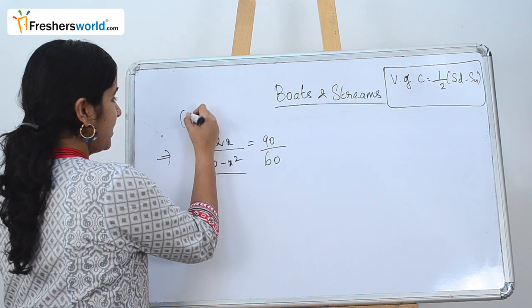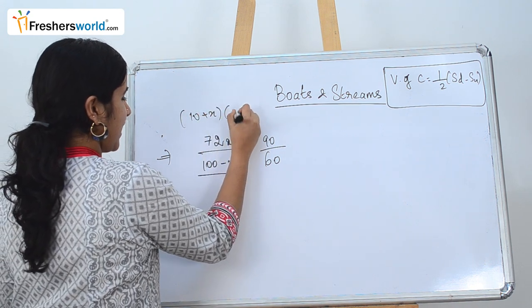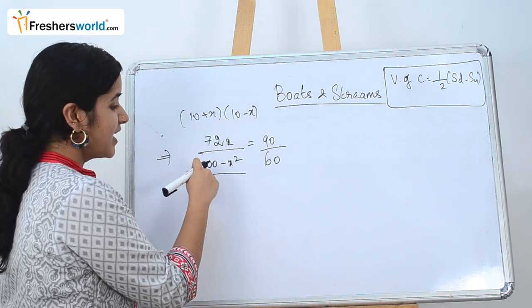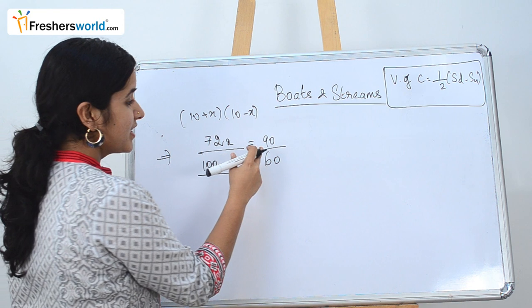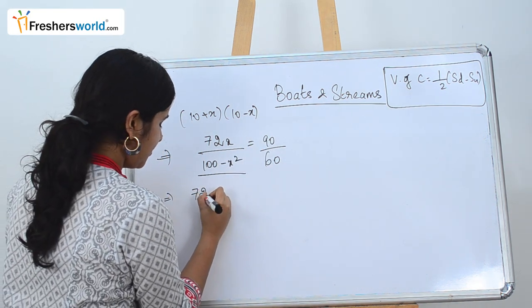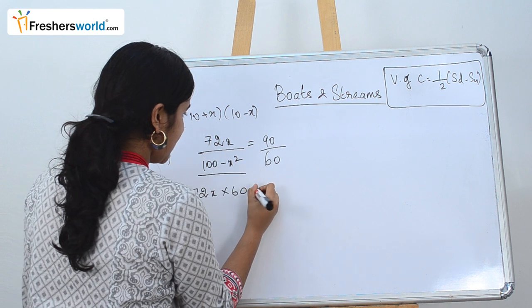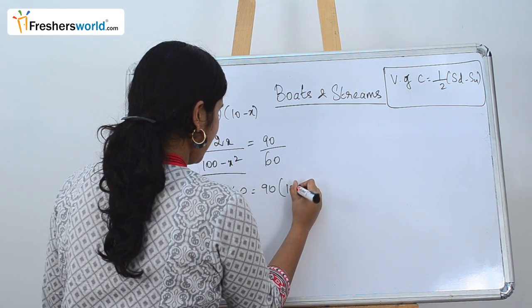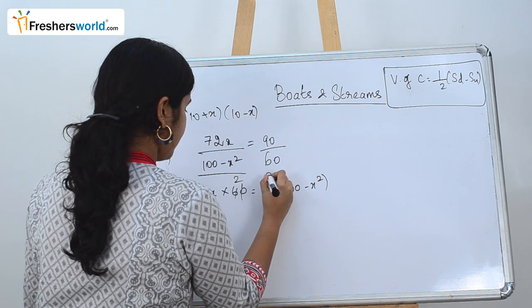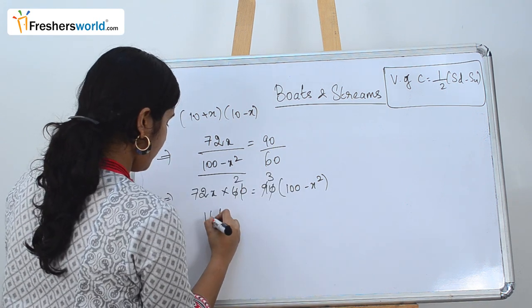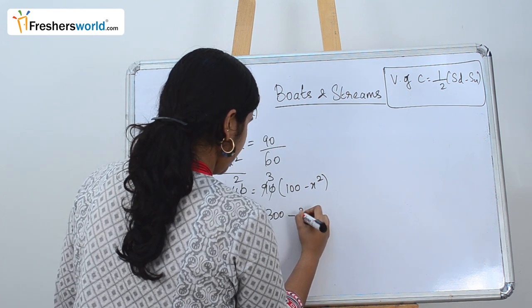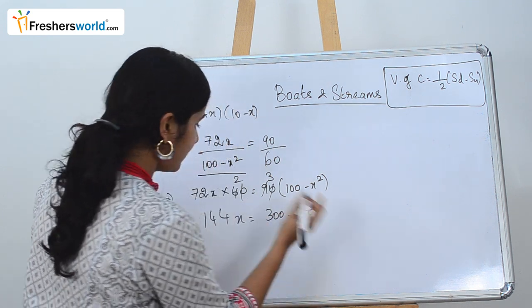The denominator (10 plus x)(10 minus x) equals 10 squared minus x squared, which is 100 minus x squared. So: 72x divided by (100 minus x squared) equals 90 by 60. Cross-multiplying: 72x times 60 equals 90 times (100 minus x squared), giving 4320x... simplifying: 144x equals 300 minus 3x squared.